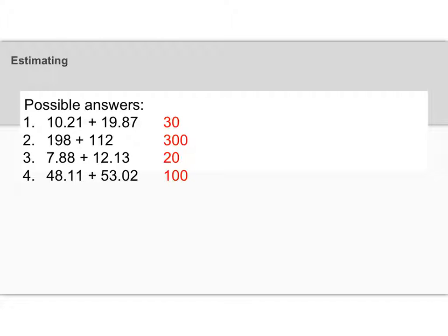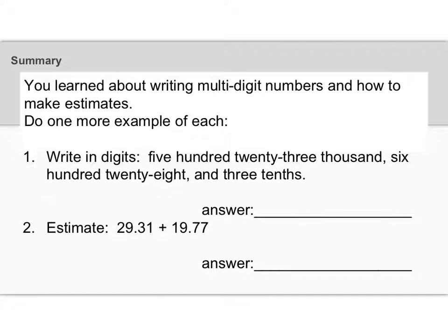And again, your answers might be a little bit different, but they should be something close to that. So take a look at those. Make sure you understood how I got my answers. And that's what I wanted to talk about in this lesson. Naming multi-digit numbers and estimating some addition and maybe subtraction problems. All right, so let's do a quick summary problem. I want you to take a couple minutes and answer these questions, and then we will see how you do with these. So pause the video and do these problems, then start it again and see what the answers are.